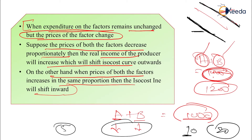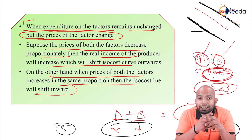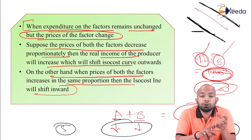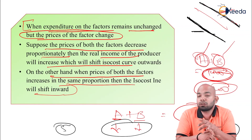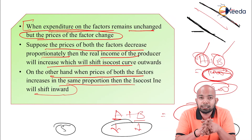To summarize: the isocost curve shifts based on two conditions — first, if total expenses are increasing or decreasing; second, if the prices of the factors of production are increasing or decreasing. This covers the isocost line, isocost curve, and the shifting patterns due to price changes of total expenses or factors of production.